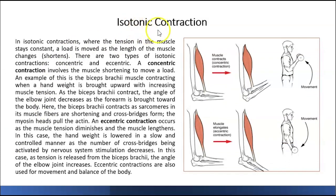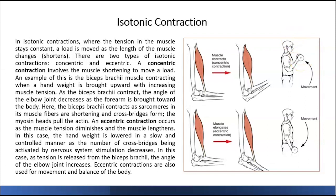The other one is isotonic contraction, which is when you produce the same amount of force all the time. For example, lifting a dumbbell. If you want to produce a movement where you can lower the dumbbell to the floor, you have to maintain the same force, otherwise it will drop. If this is five pounds and you produce five pounds, you can lift the dumbbell. But if you produce more force, it will fly out because you're producing more force than what you need. So these contractions are isotonic because you have to maintain the tone, otherwise you will drop the dumbbell.